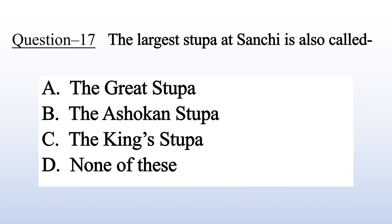Question 21: The largest stupa at Sanchi is also called — A. The Great Stupa, B. The Ashokan Stupa, C. The King Stupa, D. None of these. Answer is B: The Ashokan Stupa.